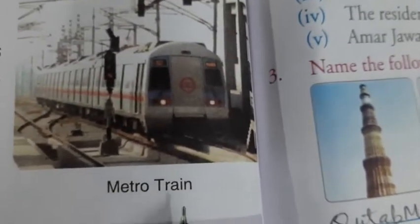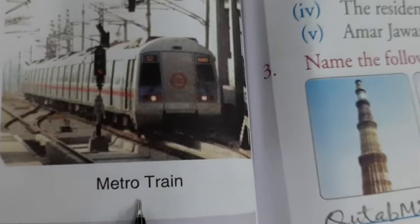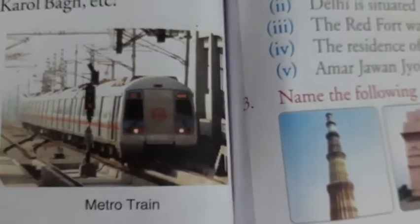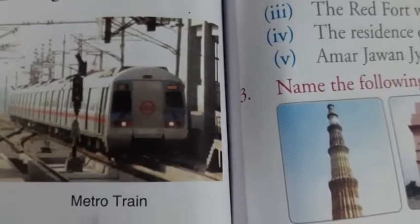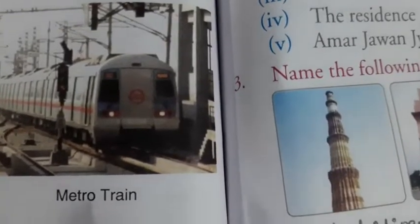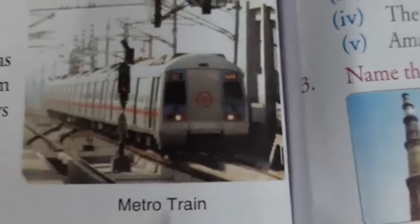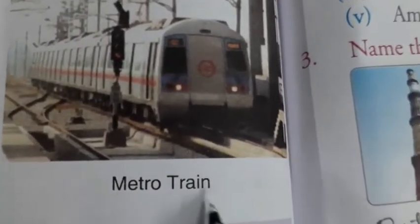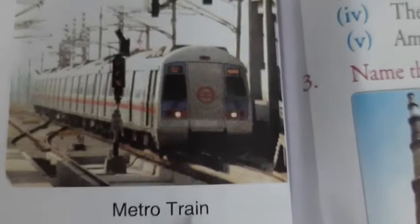Now we will discuss about transportation. Delhi is famous as the first city to have a metro train. The Delhi Metro Rail Corporation has changed the face of the transportation system in Delhi. Metro train has made journeys easier and quicker, and you can easily travel by railways or airways.